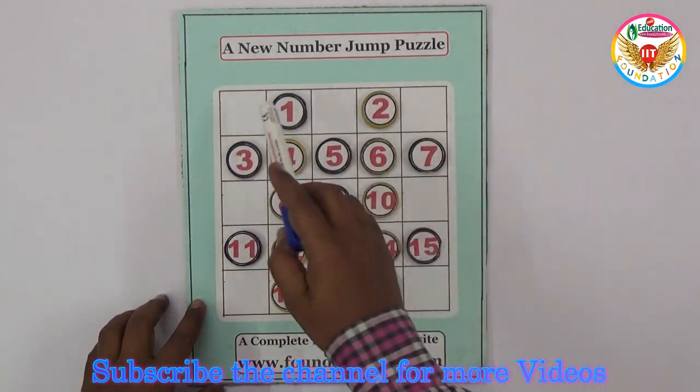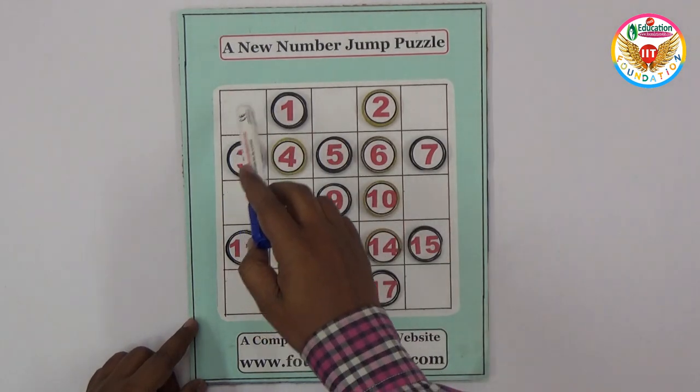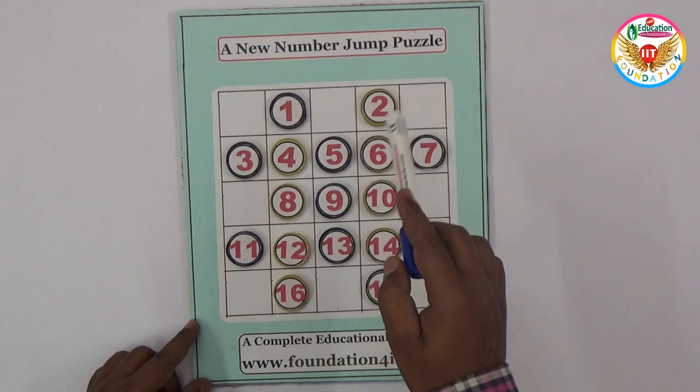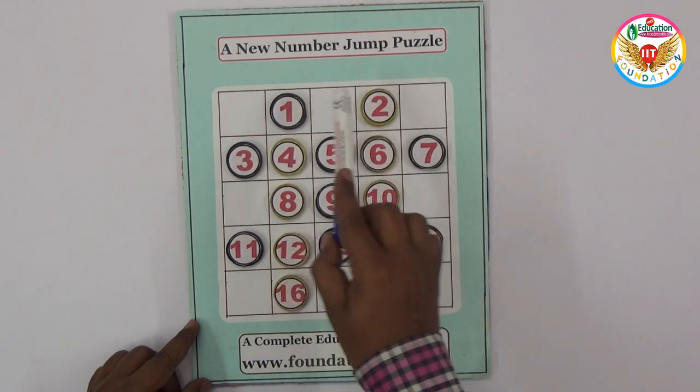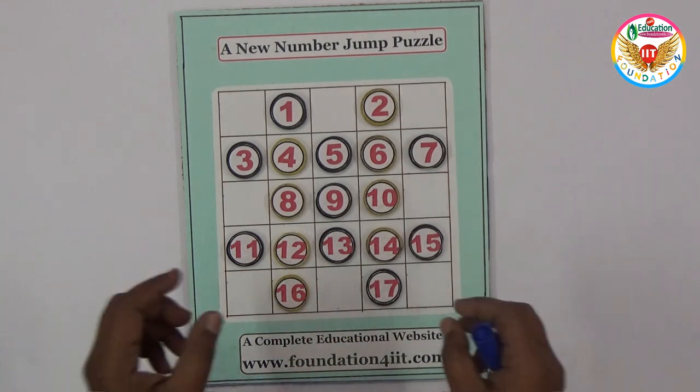If you observe this table, this normal cardboard I prepared in this way: 5 rows and 5 columns, so total 25 boxes. Numbers 1 to 17 are arranged in this manner. First row is only 1 and 2, and second row is completely 3 to 7.